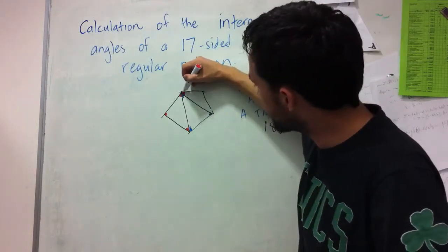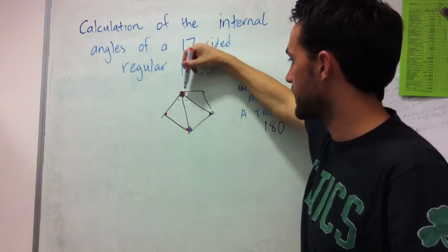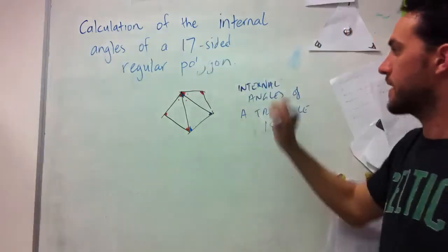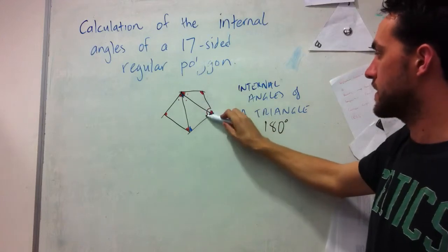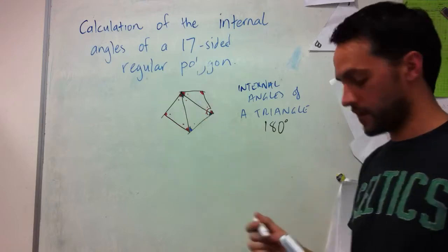You can see here that this angle of the pentagon is made up of this angle, this angle, and this angle of those triangles. This angle of the pentagon here is exactly the same as this angle of the triangle. This angle of the pentagon here is this angle plus this angle. Then here we have this angle, this angle, and this one.